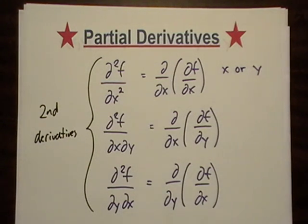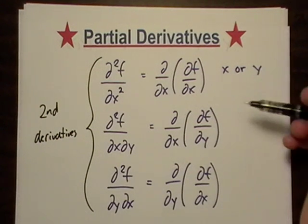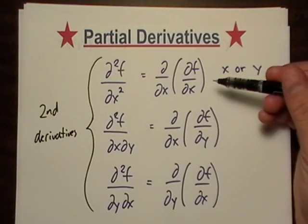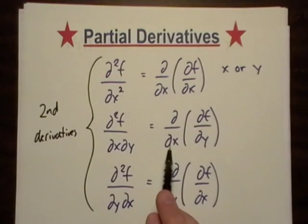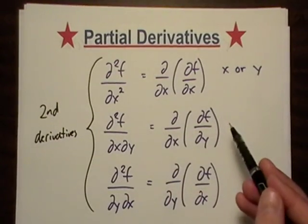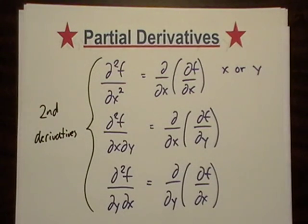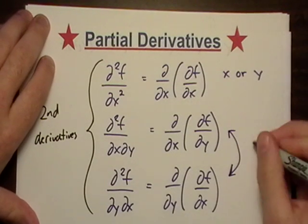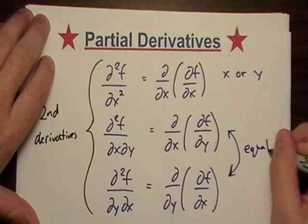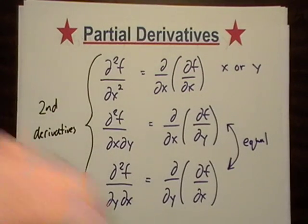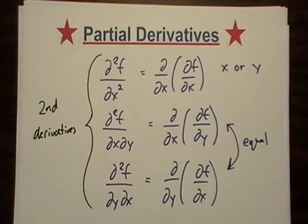But in multivariable functions, we have what are called mixed partials. So basically, once we find the partial of f and the partial of y, we can take the partial of x against the partial of y and vice versa. And really, these two guys here, they should be equal. So you know you screwed up if they're not equal. And if you're pretty confident with your stuff, you only have to do one of them.